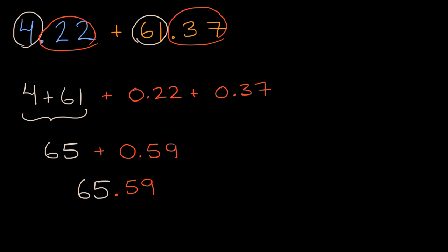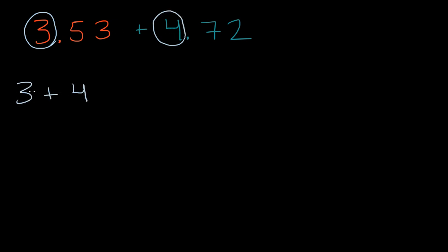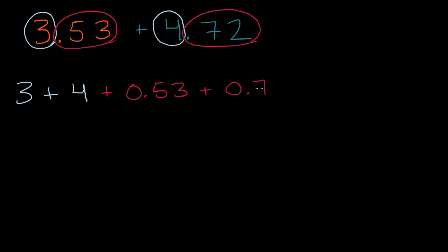Let's do another example. We have three and 53 hundredths, and we want to add that to four and 72 hundredths. Pause the video and see if you can figure it out on your own. Like we did in the previous example, we add the ones — three ones plus four ones, so three plus four — and then we add the hundredths: 53 hundredths plus 72 hundredths.